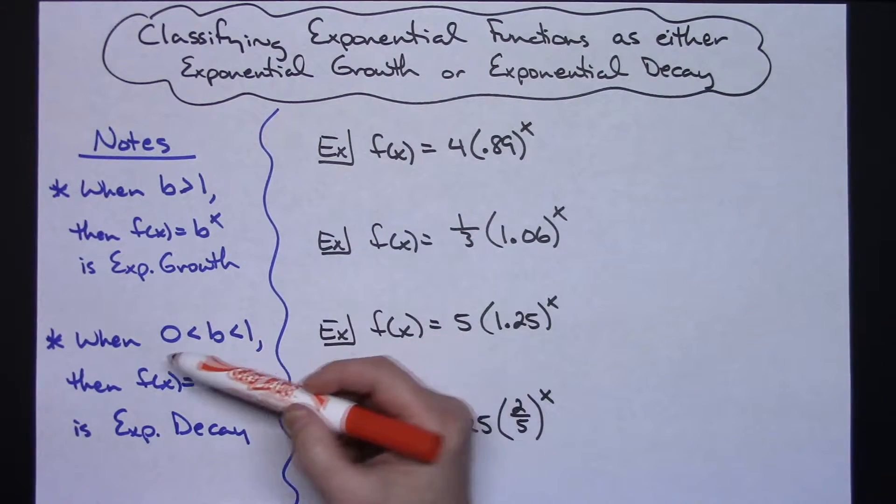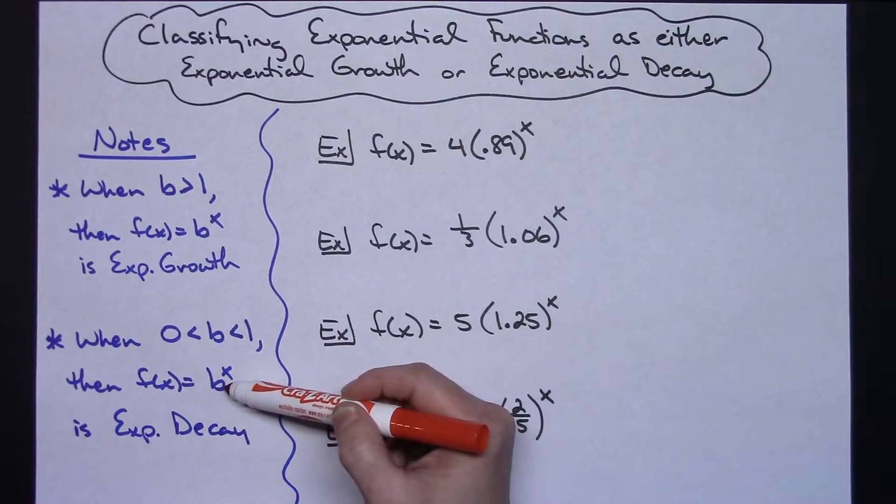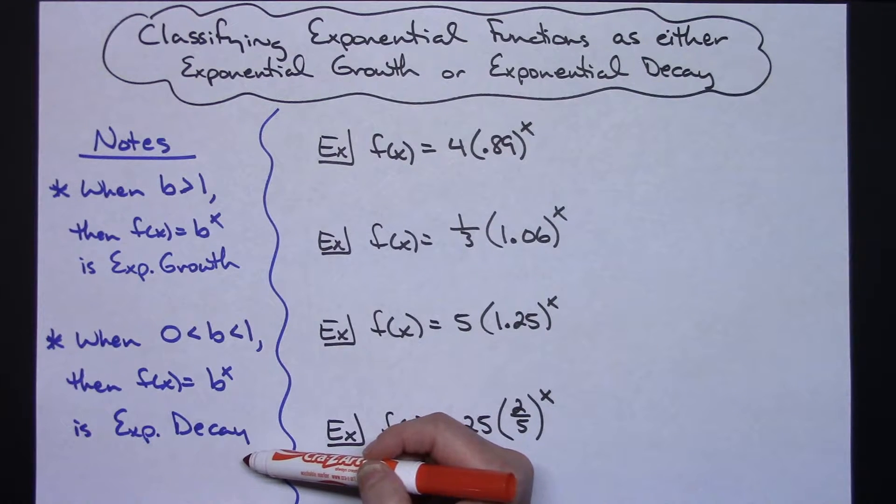The second thing to memorize is if that base falls in between 0 and 1 then that exponential function is going to be an exponential decay.